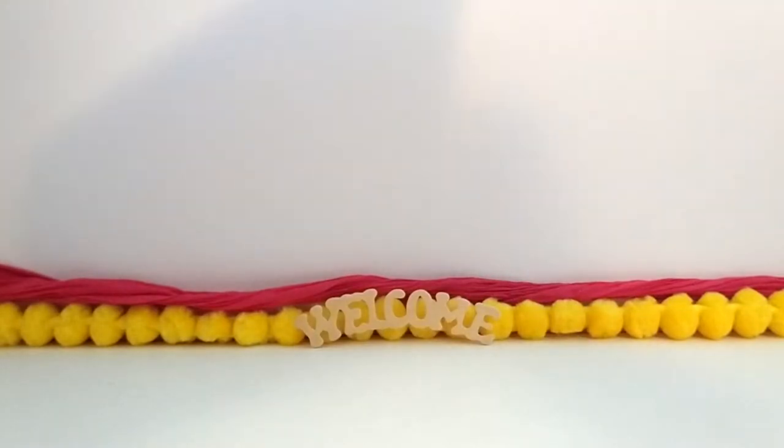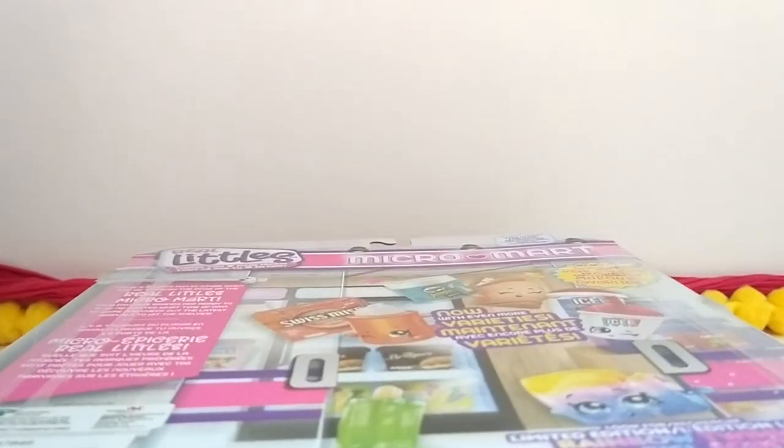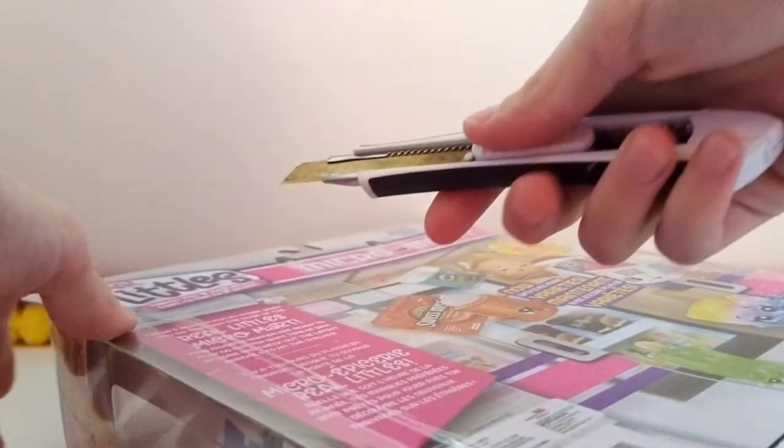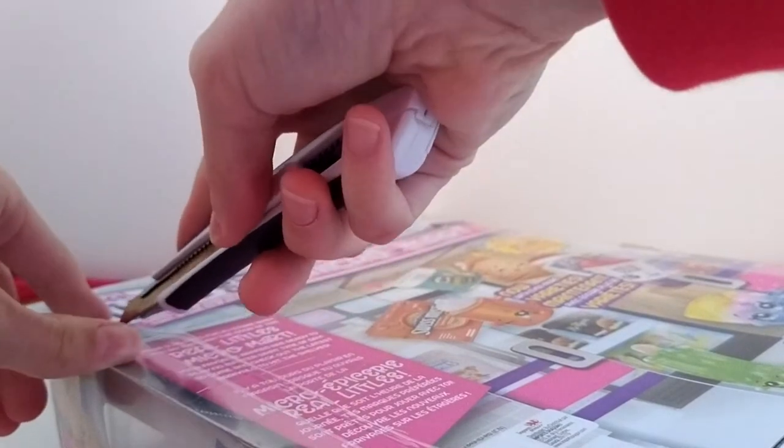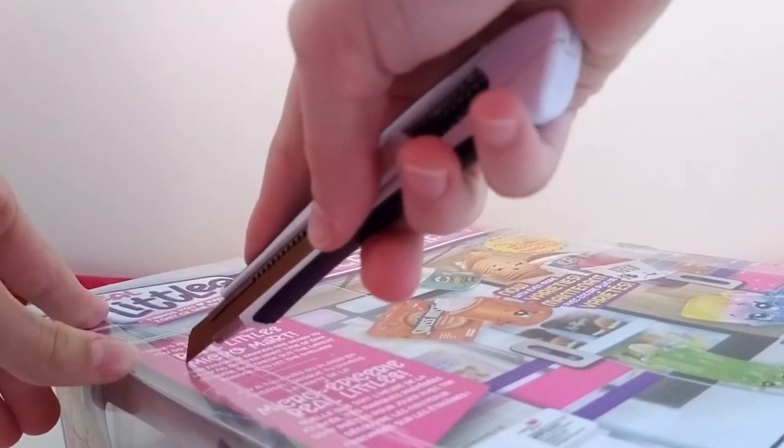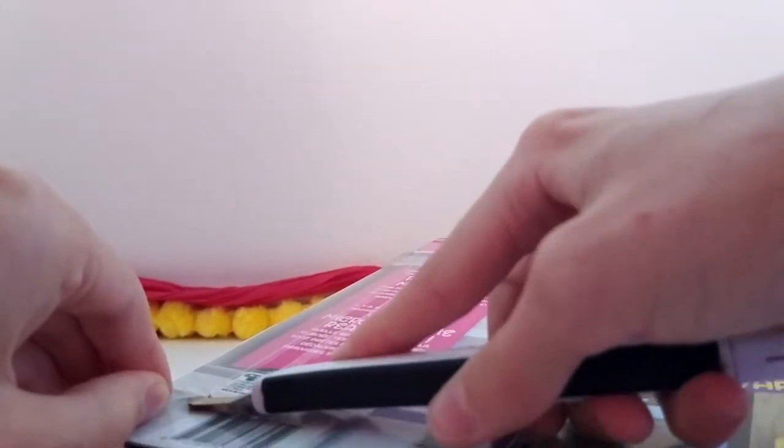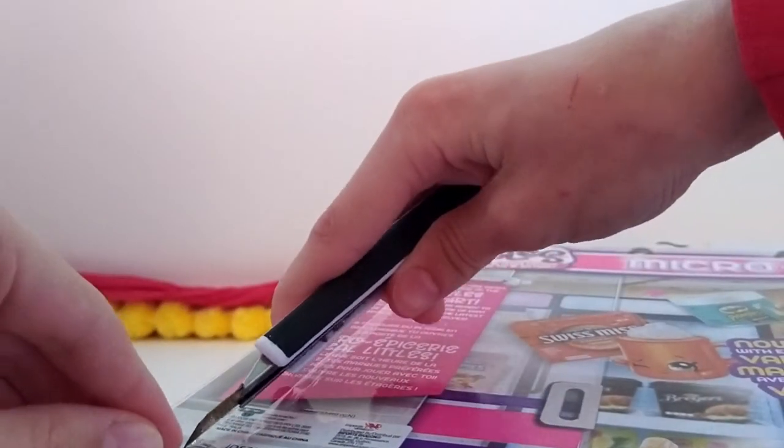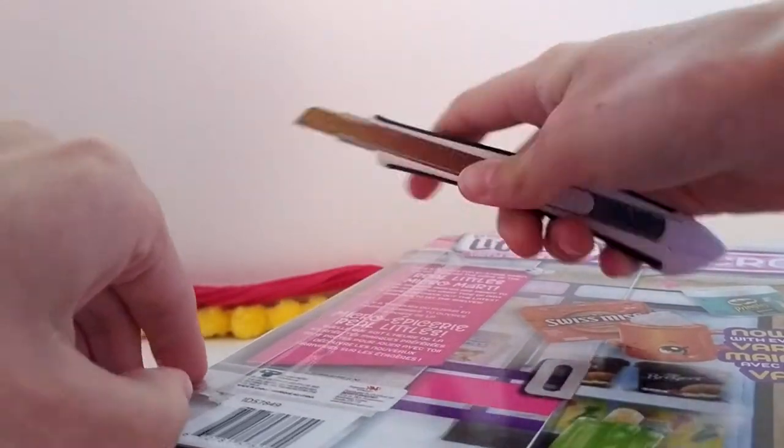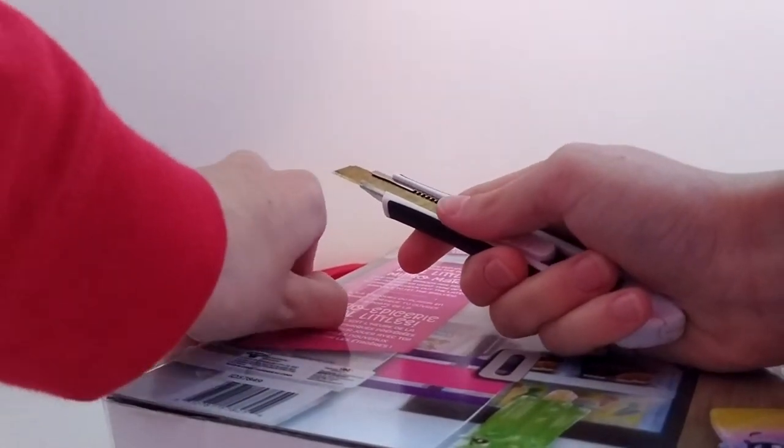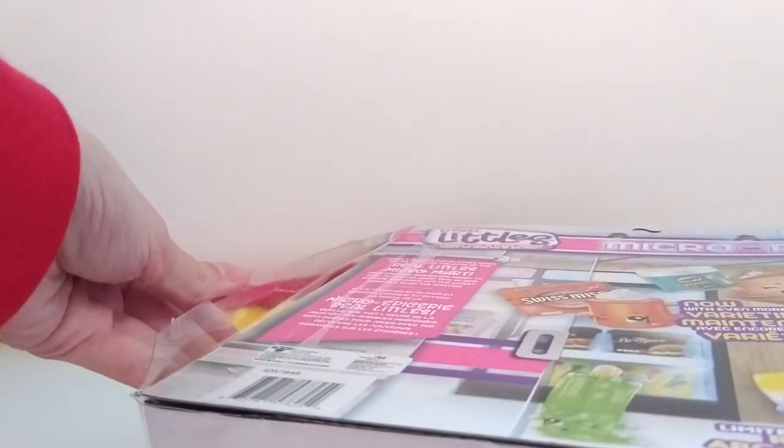I don't want to wreck the packaging because I want to use it to display them later. So what I'm going to be doing is there's some tape right here and right here. And we're going to be cutting along this line. And I'm going to see if I can do this without wrecking the packaging. There we go. That one's cut.